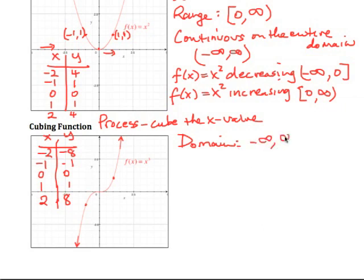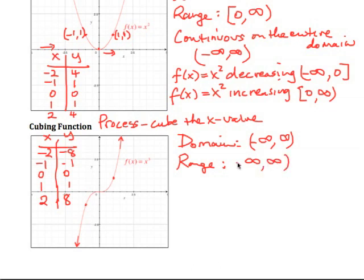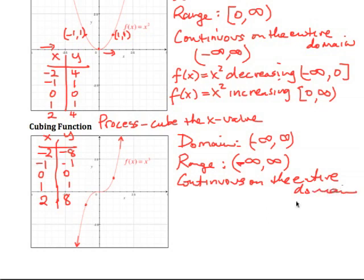What is the domain? We can cube any real number without restriction, so the domain is all real numbers. For the range, we're producing both positive and negative numbers, so every real number is covered — the range is negative infinity to infinity. We can trace over this function without taking our pen off, so it's continuous on the entire domain.